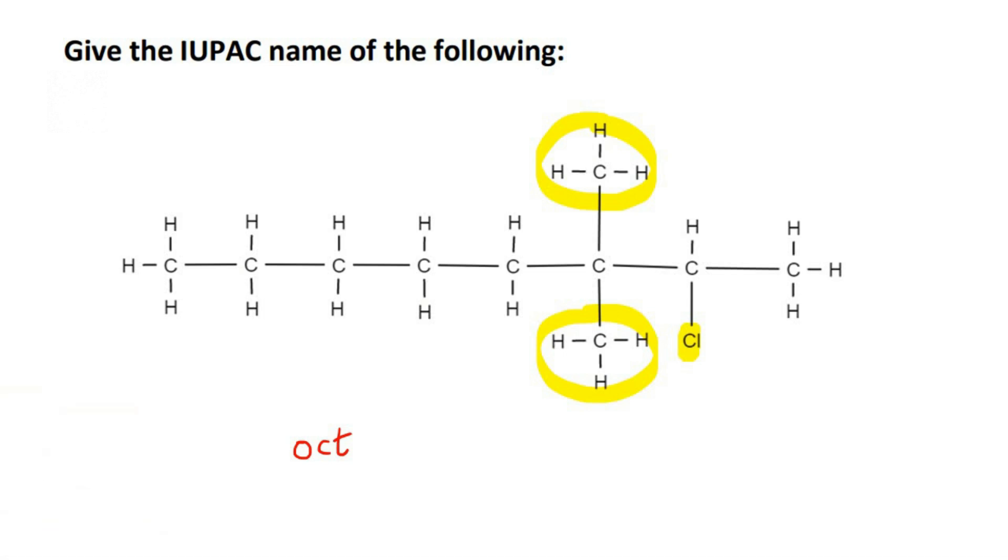So the branch is on carbon number 2 and also on carbon number 3. Now, many learners make the mistake of saying that this part over here is ethyl. The reason that they do that is they say, oh look, there's one carbon and two carbons.